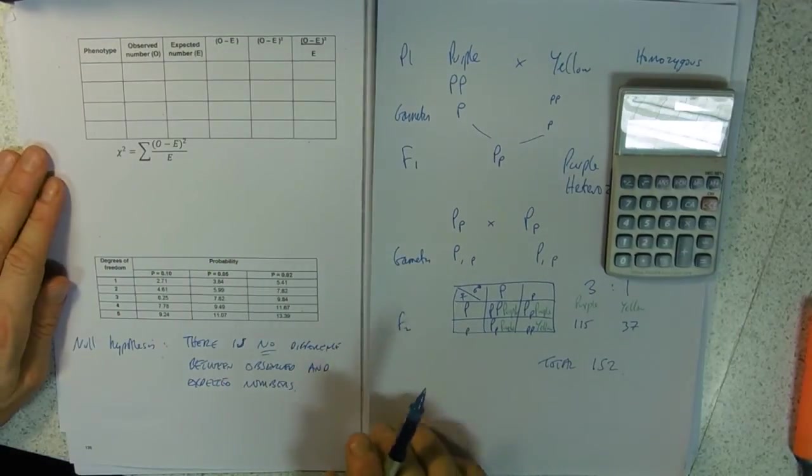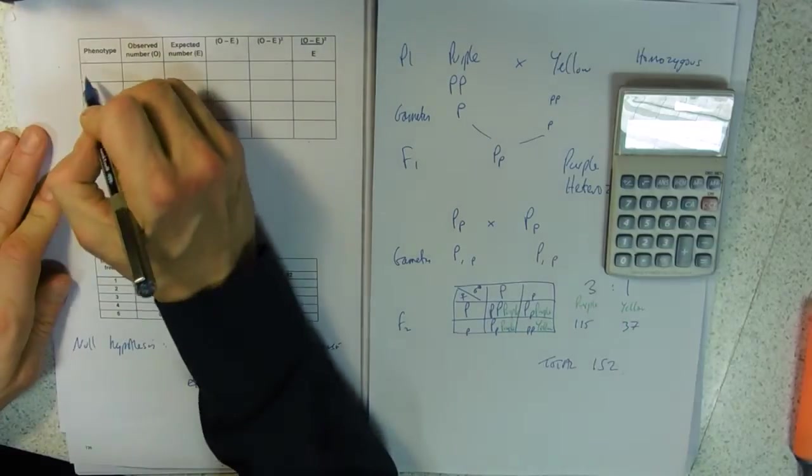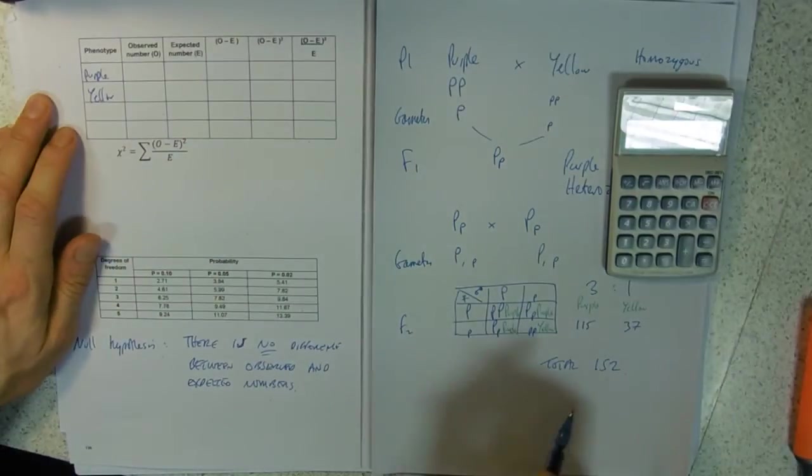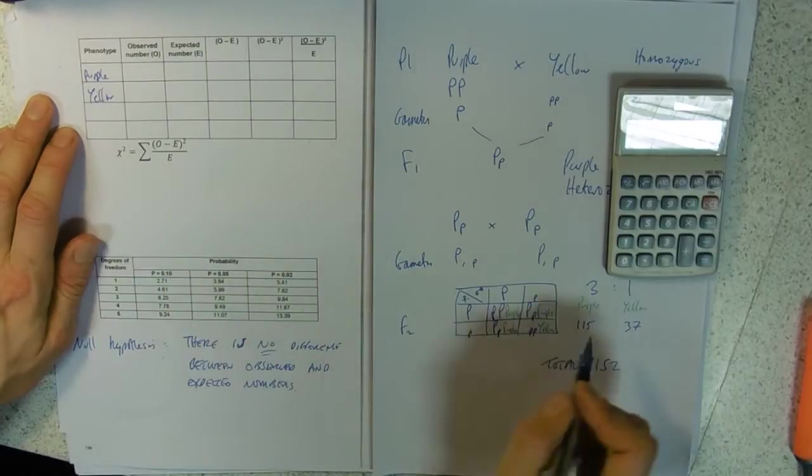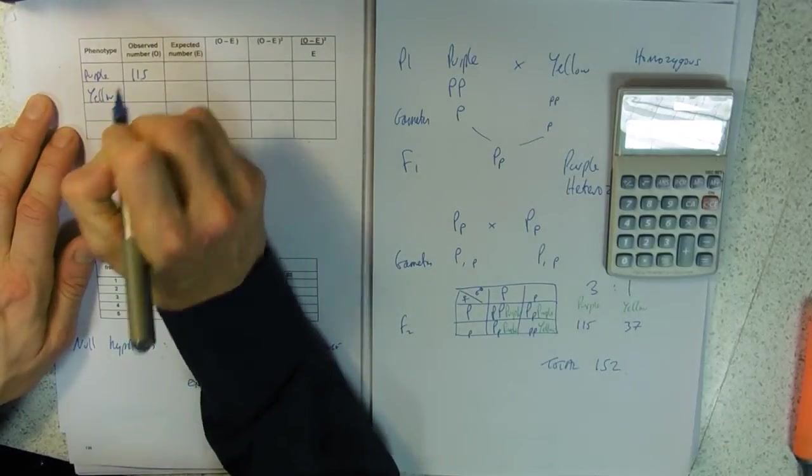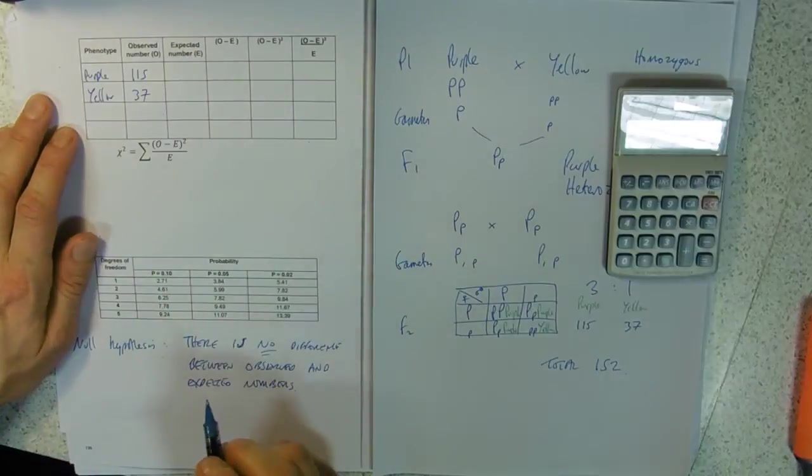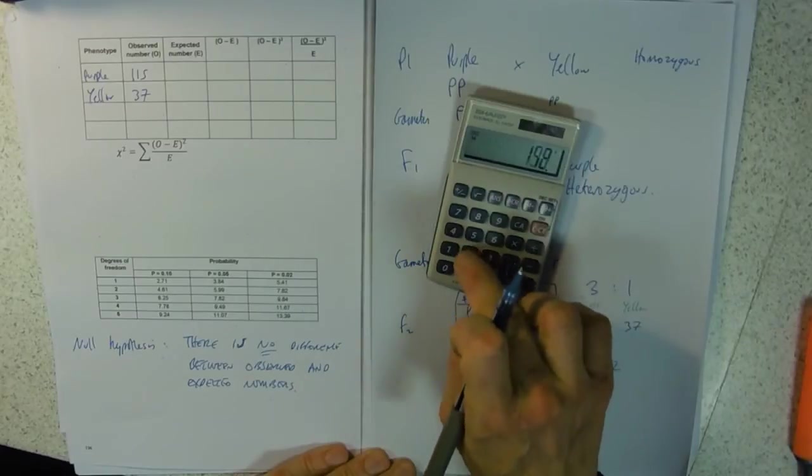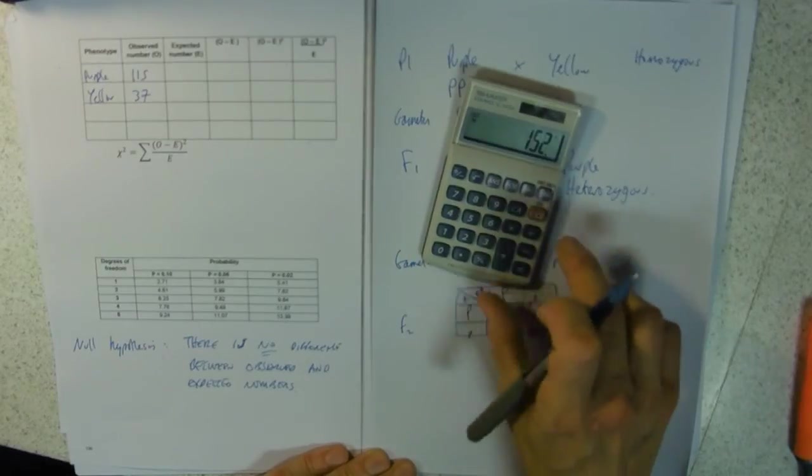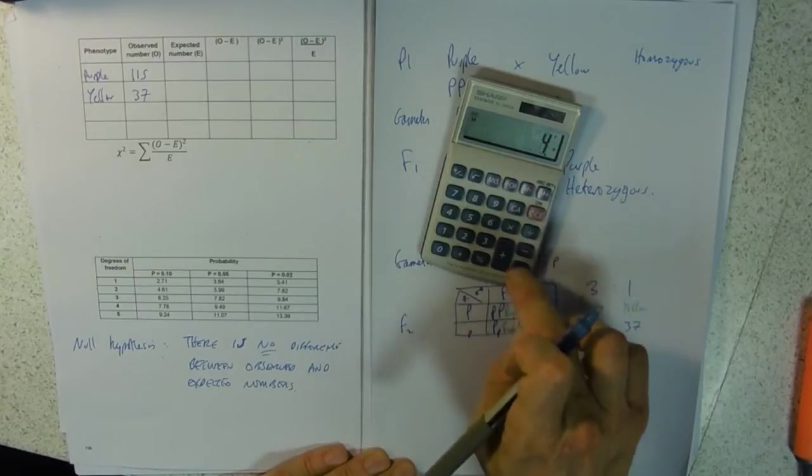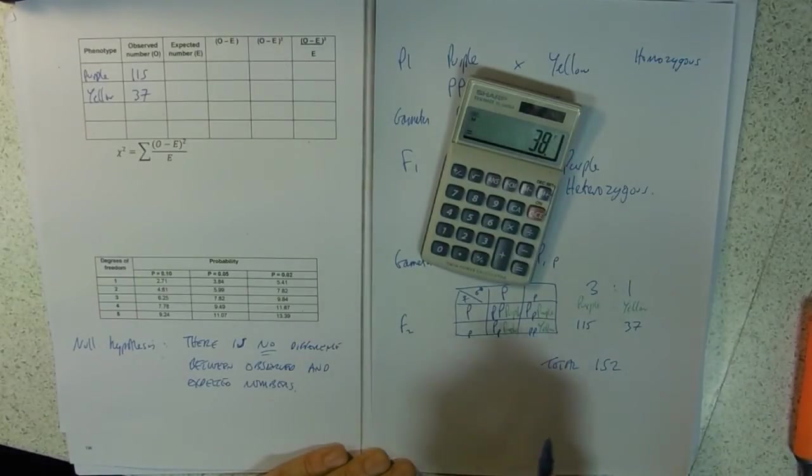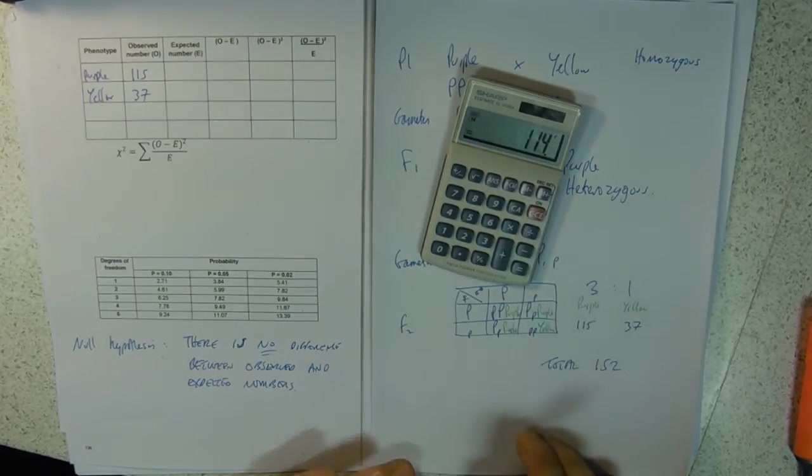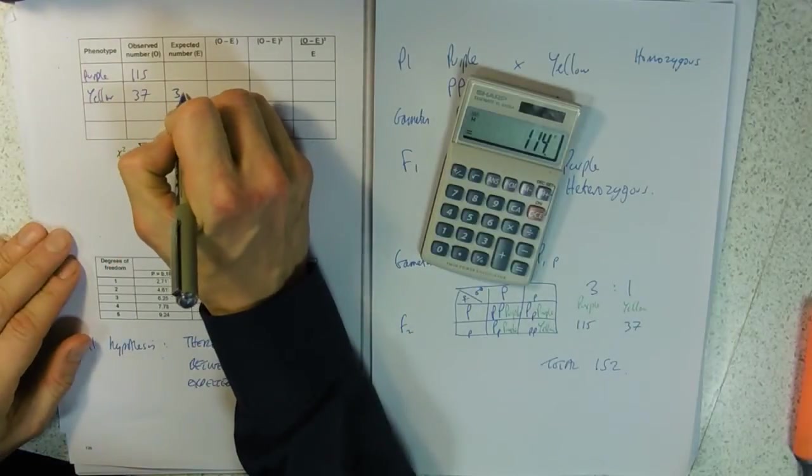All we need to do is fill in a table. Phenotypes - we've got purple and yellow. Our observed numbers - we had 115 purple, 37 yellow. How many did we expect? If we've got 152 in a three to one ratio, let's divide that into four.